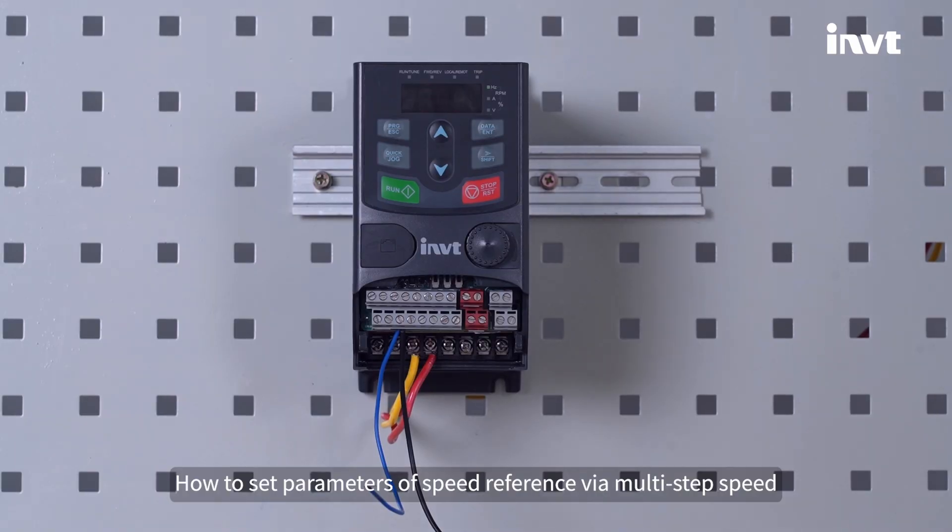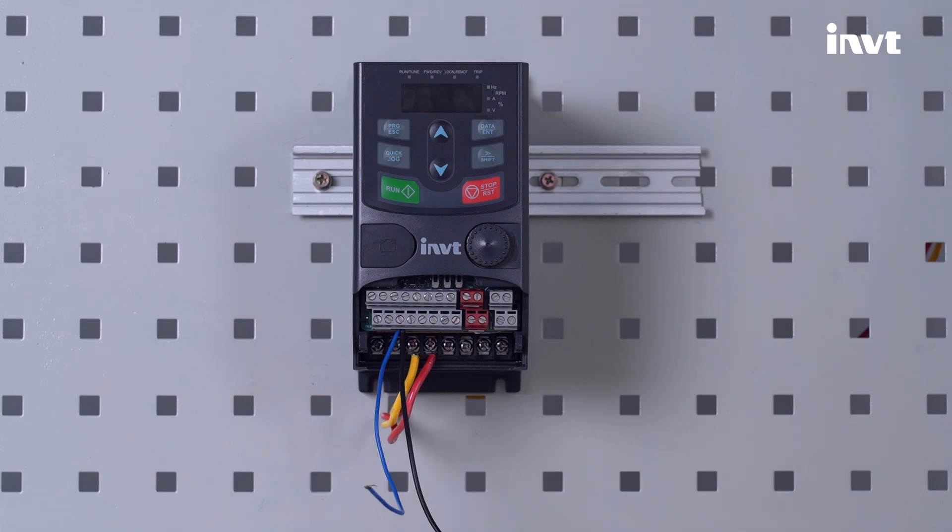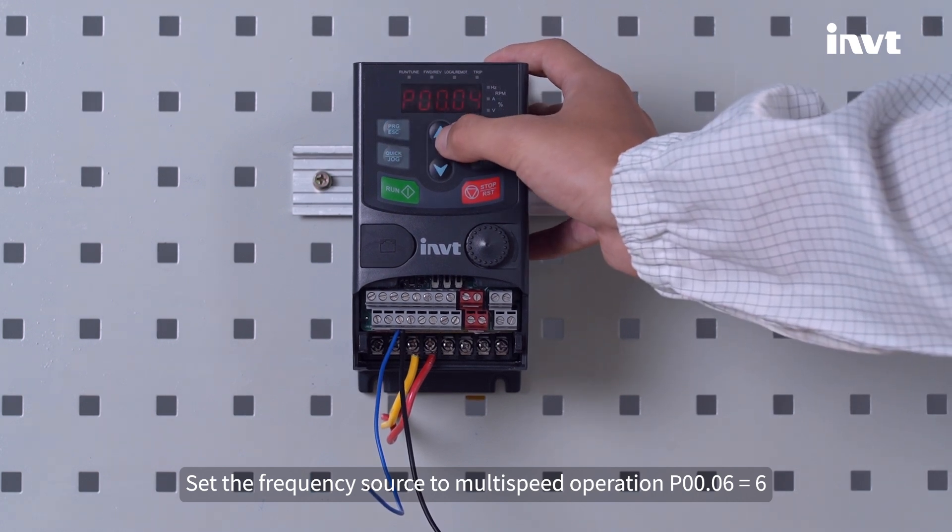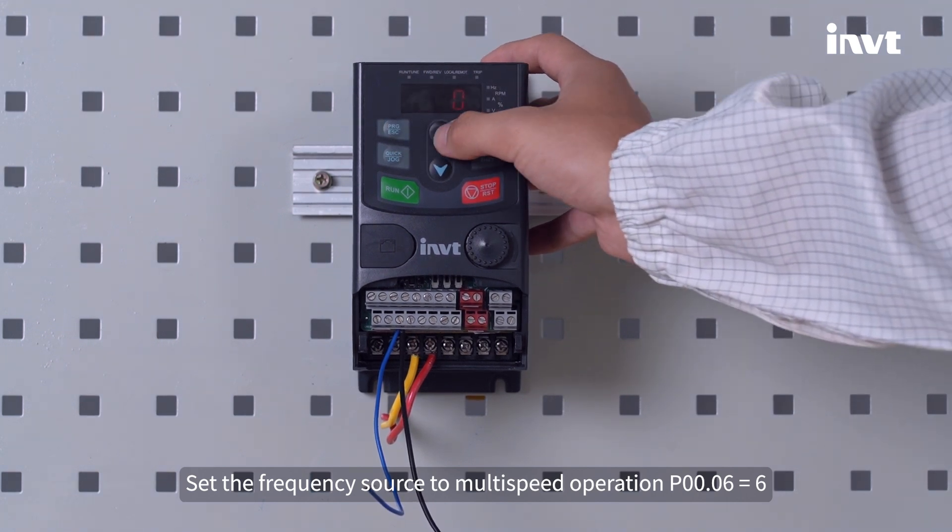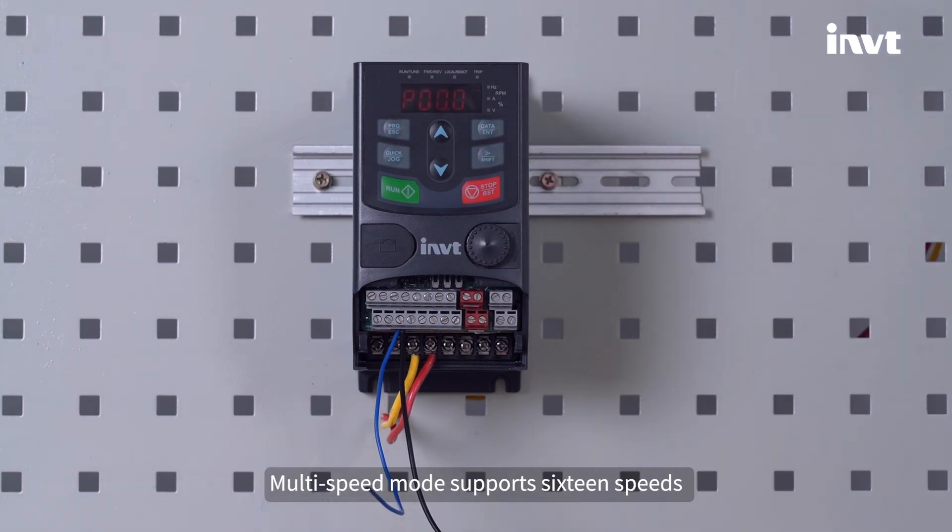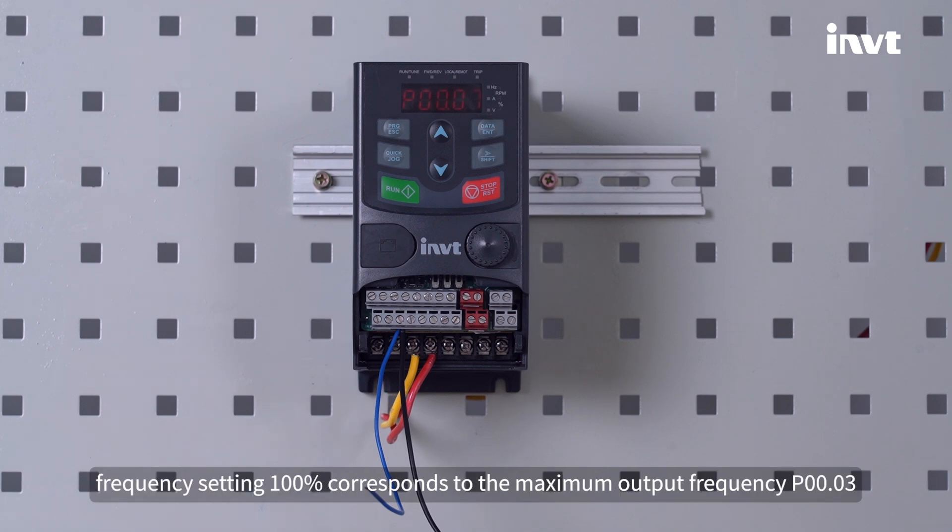How to set parameters of speed reference via multi-step speed. Set the frequency source to multi-speed operation P0.06 equals 6. Multi-speed mode supports 16 speeds frequency setting, 100 corresponds to the maximum output frequency P0.03.